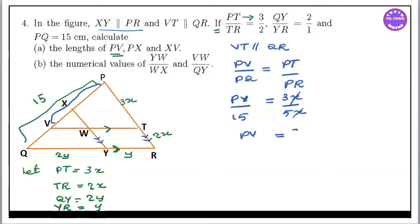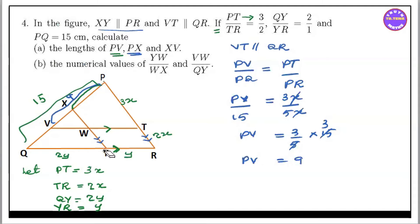So BV equals 3x by 5x equals 15. So BD, BV equals 9. So BV equals 9. Now PX — P or X — are equal to 9. So XY equals 9.